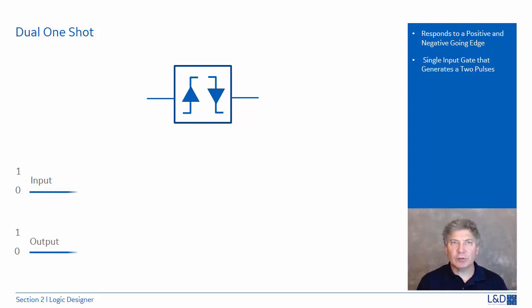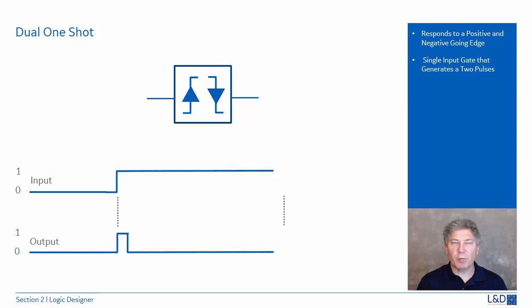The graph shows the relationship between the input and the output of a dual one-shot. On both the positive and negative transitions of the input, a short-duration pulse is generated on the output.